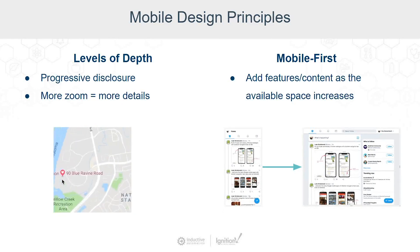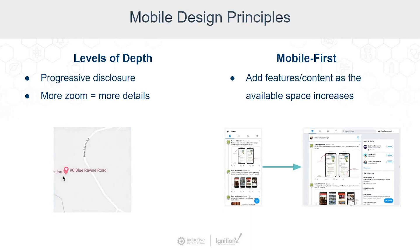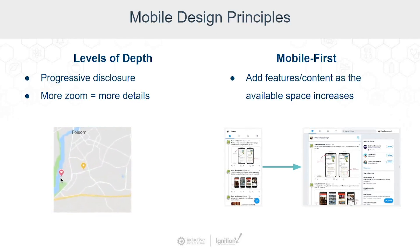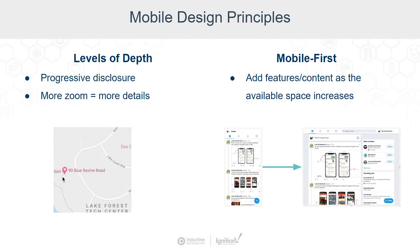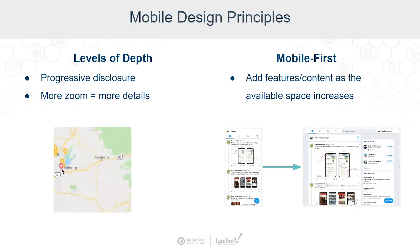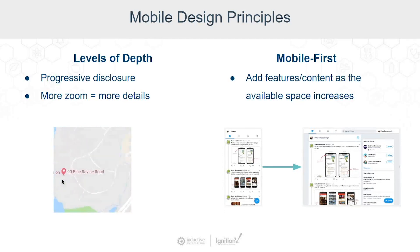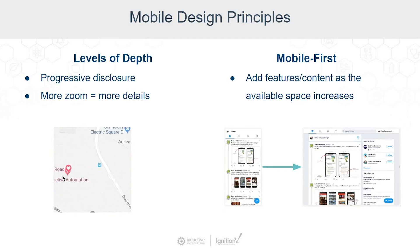Mobile first is a mental shift of designing for mobile first and then expanding content and functionality as we have more real estate on our screen. On mobile, the design is really focused and specific to what the user's actions and top priorities would be.